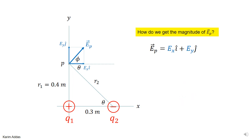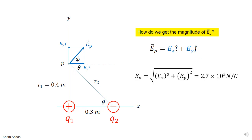Finally, for the magnitude of the total electric field: if a vector has x and y components, its magnitude is the square root of Ex squared plus Ey squared. Plugging in the two values gives a magnitude of 2.7 × 10⁵ N/C.